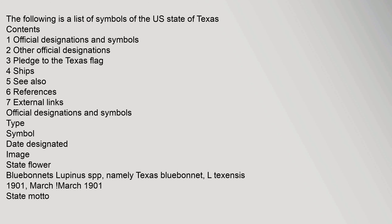The following is a list of symbols of the U.S. state of Texas. Contents: 1. Official designations and symbols; 2. Other official designations; 3. Pledge to the Texas flag; 4. Ships; 5. See also; 6. References; 7. External links. Official designations and symbols: Type, Symbol, Date Designated, Image.